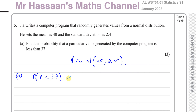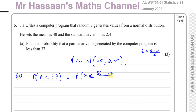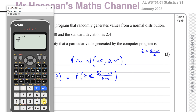We need to standardize this value and give it in terms of Z, which has a standard deviation of 1 and a mean of 0. We use the formula Z equals X minus mu over sigma. So we want to find the probability that Z is less than 37 minus 40, divided by 2.4. That gives us negative 3 over 2.4, which is negative 5 over 4, which is negative 1.25.